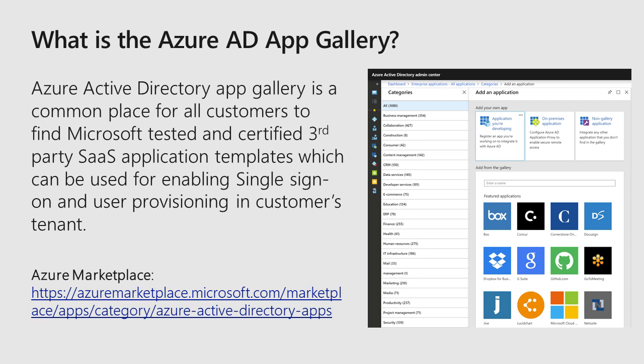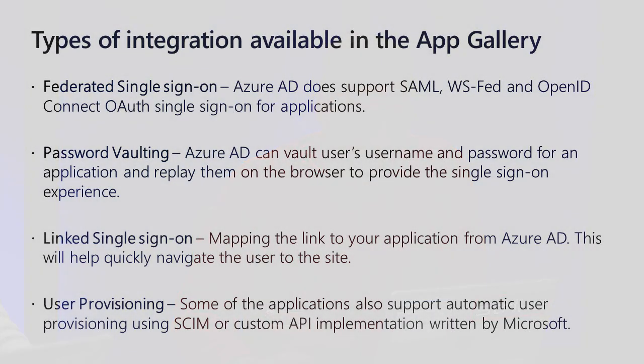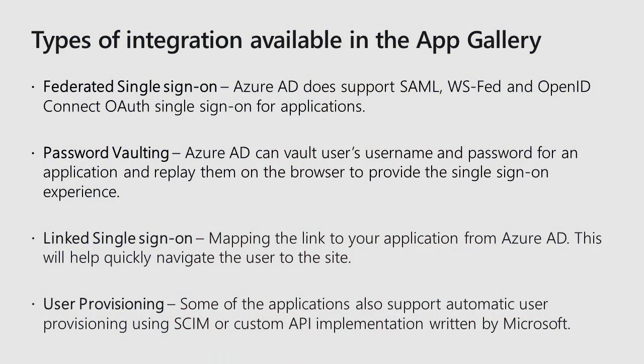Customers can use these applications to configure single sign-on and user provisioning. If somebody wants to see which apps are present in the App Gallery, they can use our Azure Marketplace website where all applications and their capabilities are publicly listed. There are different types of integrations available. The most common is federated single sign-on. Azure Active Directory supports different federation protocols like SAML, WS-Federation, and OpenID Connect OAuth. We also support password vaulting, where the user's password is stored through Azure Active Directory and replayed in the browser, giving the feel of password-based single sign-on.